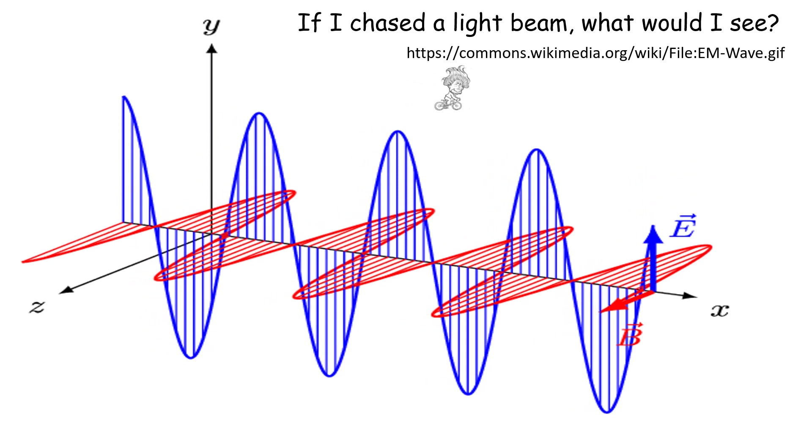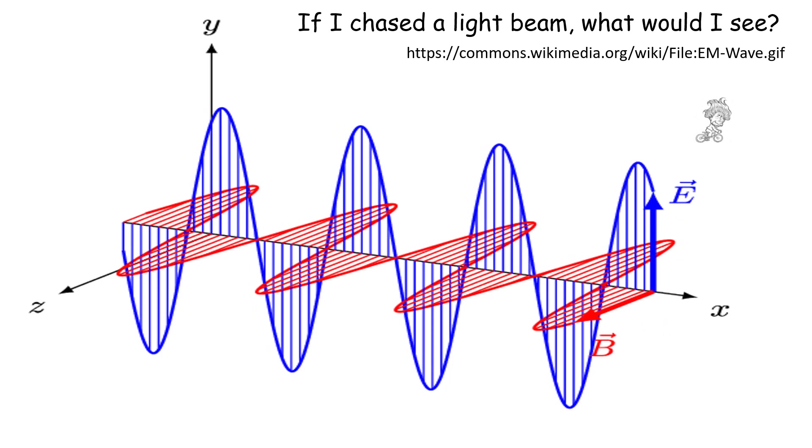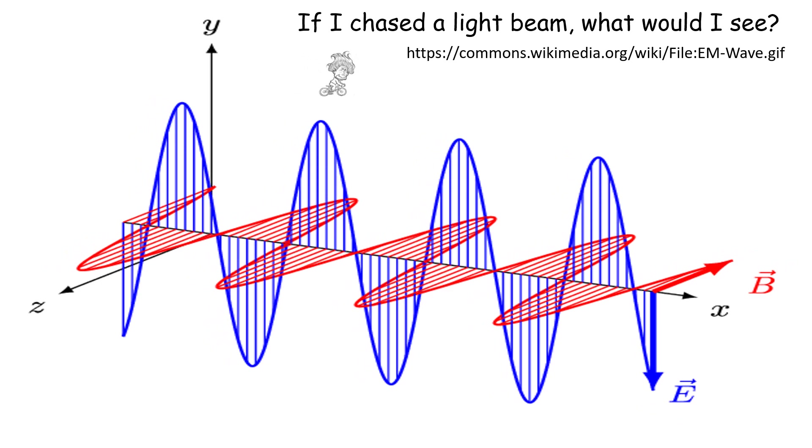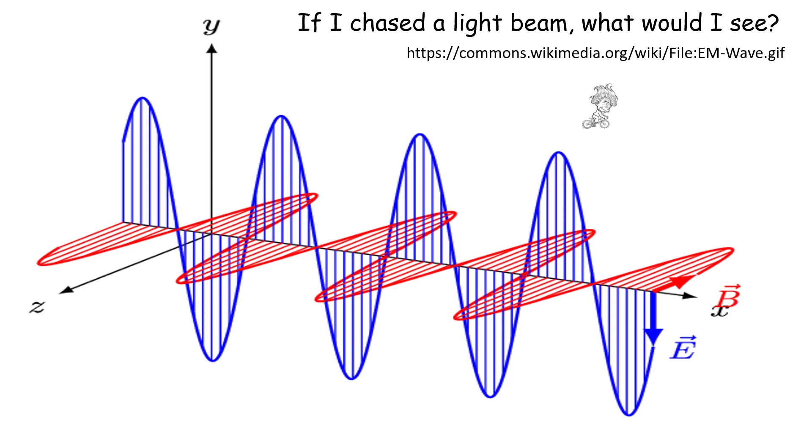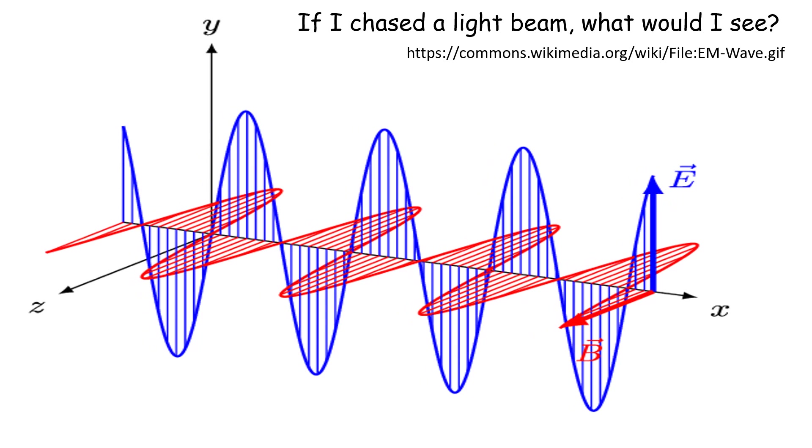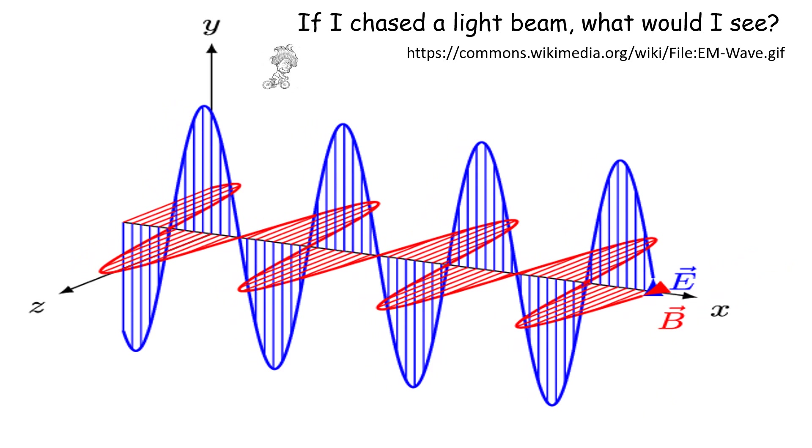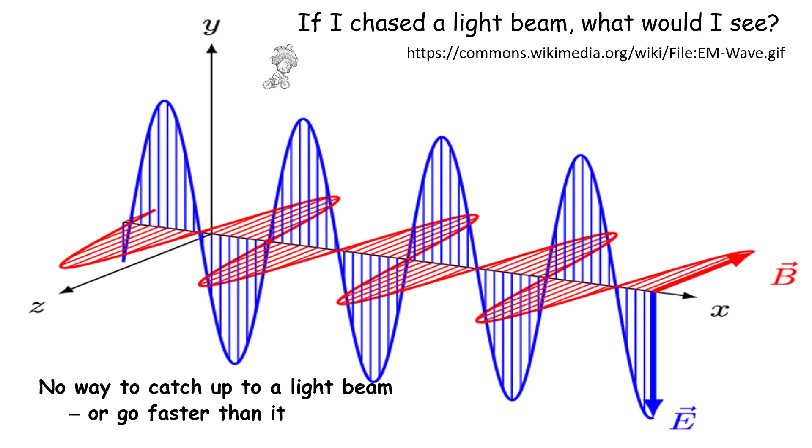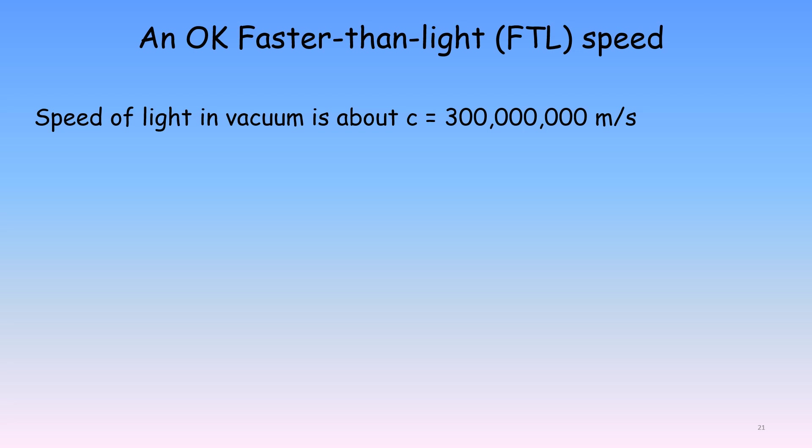The thought experiment that Einstein imagined at age 16 involved chasing after a light beam and moving at its speed. In that case, the light beam would appear stationary, just like another car appears stationary when your car has the same speed. In effect, the light beam chaser would see a stationary electromagnetic wave, which Einstein realized could not exist, based on Maxwell's well-established equations. Therefore, Einstein concluded that catching up to and moving with a light beam was impossible, and surely if you couldn't catch up to a light beam, you could not go faster than it either.